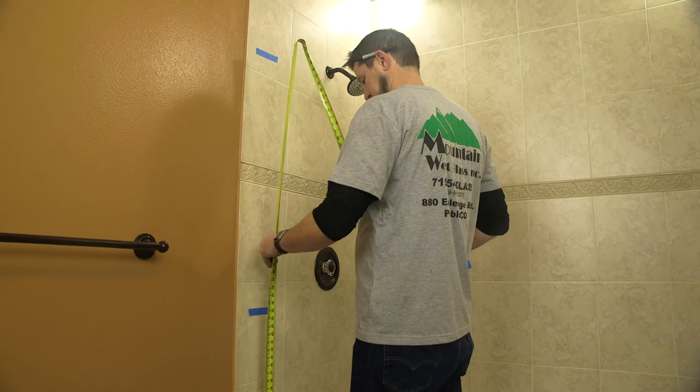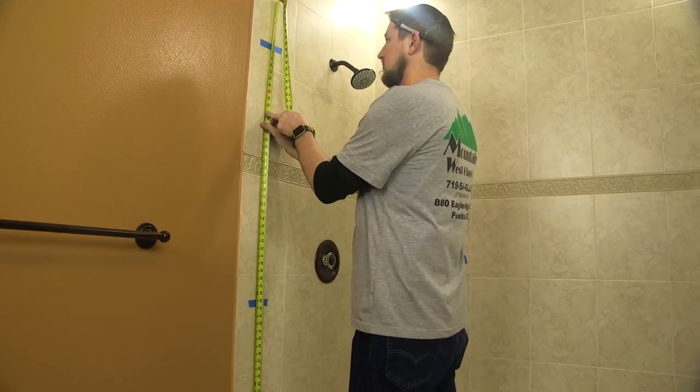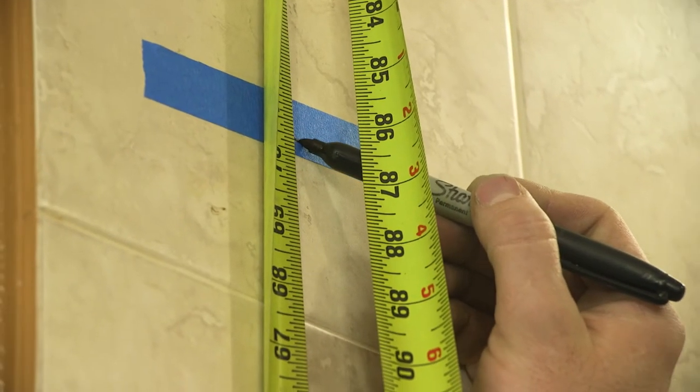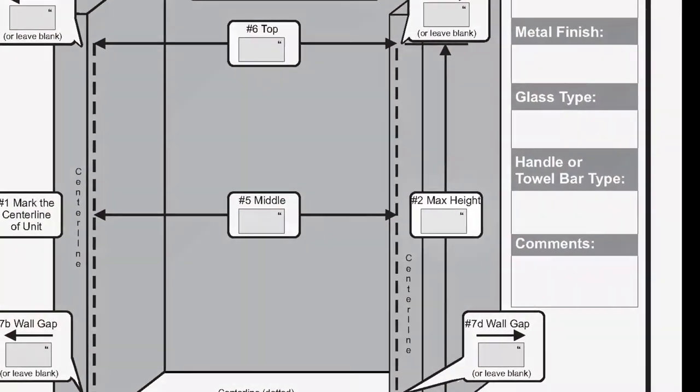Using the tape measure, mark the desired or maximum height, known as the finished height, of the enclosure on the top piece of tape. Note this on the Holcomb measuring sheet, box number two.